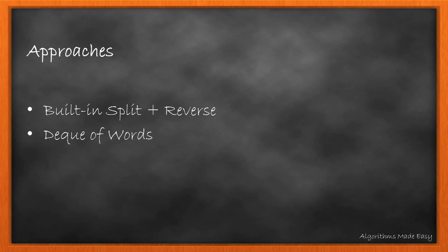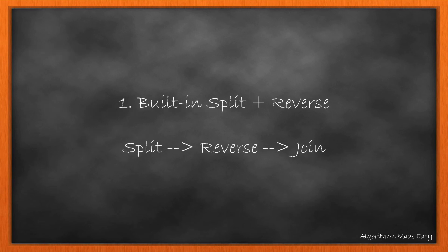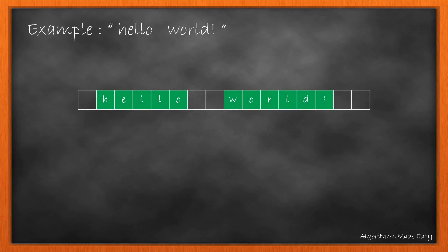We will cover two approaches. First is using the built-in methods and second is by using a doubly ended queue or a deque. Let's start with the first one. This is a three step process in which we split, reverse and then join. Let's take this example that has leading spaces, trailing spaces and also multiple spaces in between the words.